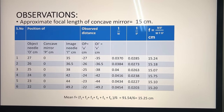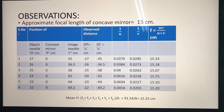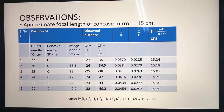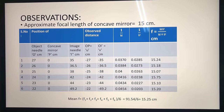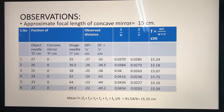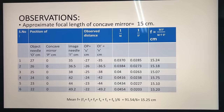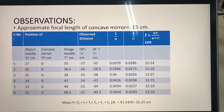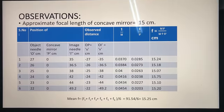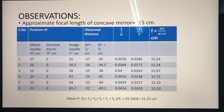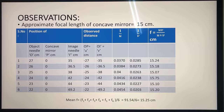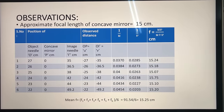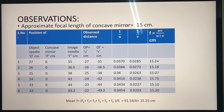Observations: The approximate focal length was found to be 15 cm. For the first reading, the object was at 27 cm, the mirror at 0 cm, and the image at 35 cm. Applying sign conventions, U = −27 cm and V = −35 cm. Then 1/U = 0.0370, 1/V = 0.0285, and applying F = UV/(U + V) gives F₁ = 15.24 cm.